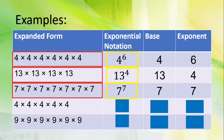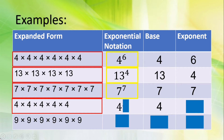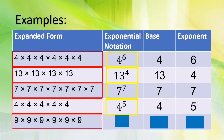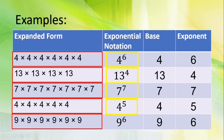Let's move to the next expanded form. What number is multiplied by itself several times? Correct, so four is our base. Let's count how many fours: one, two, three, four, five. So, five is our exponent. Four raised to the fifth power. Let's move to the last expanded form. What number is being multiplied by itself several times? It's nine, so nine is our base. Let's count: one, two, three, four, five, six. So, the exponent is six. It is nine raised to the sixth power.